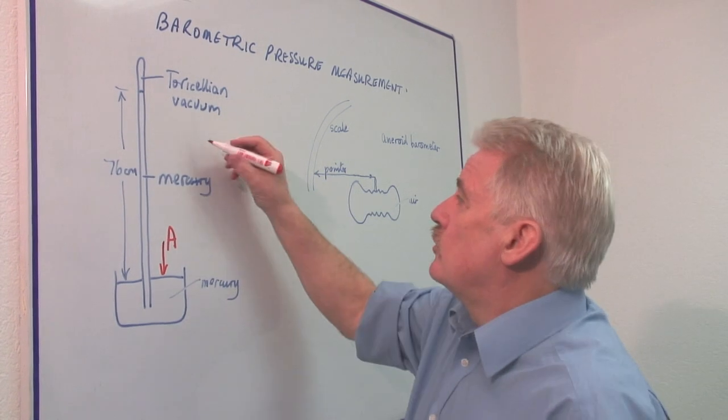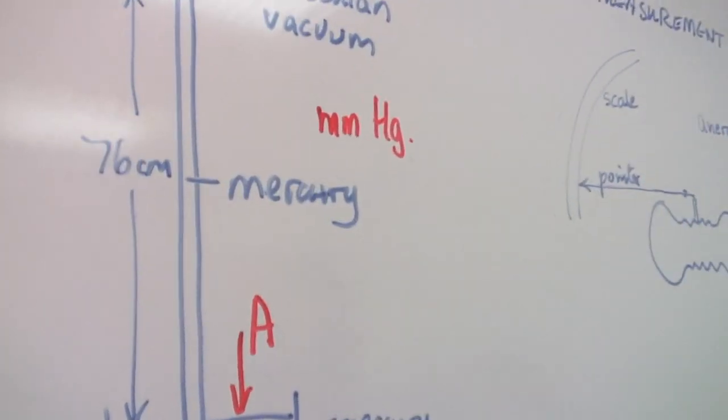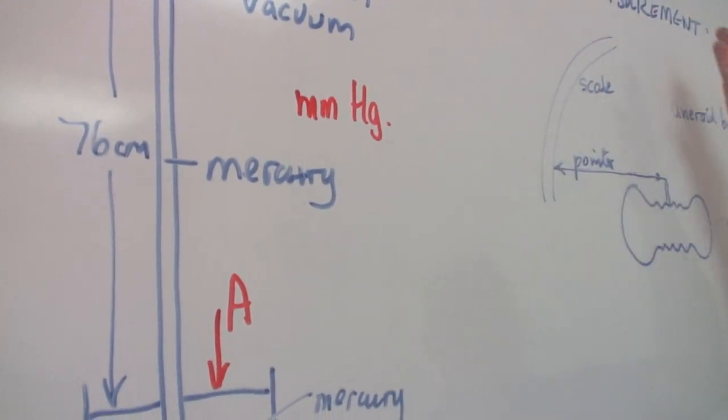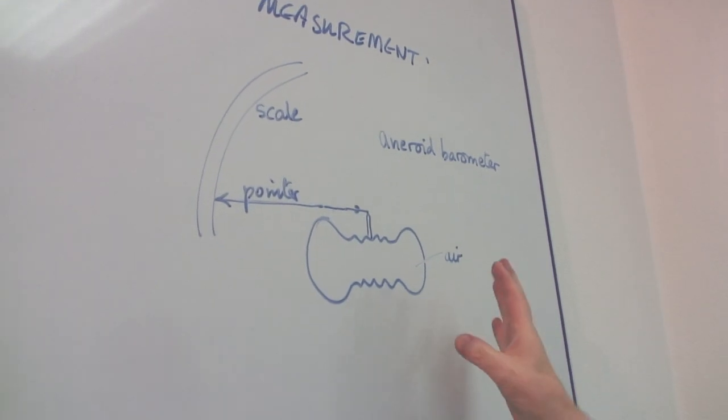And it's in normally millimeters of mercury. If we use this device, it is not accurate. This is an aneroid barometer.